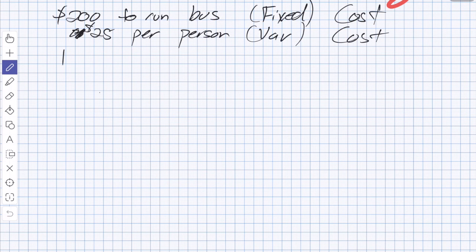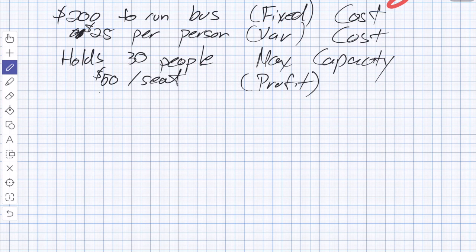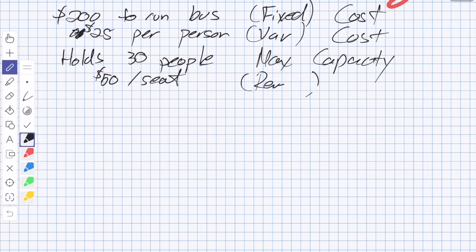We're also going to say the bus holds 30 people. So it has a max capacity. And we're going to charge $50 a seat. This would be considered profit on their end. Actually, it's revenue because profit is after. So we'll call it revenue. That's what they charge someone to ride the bus.